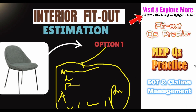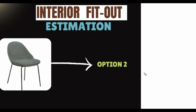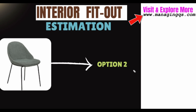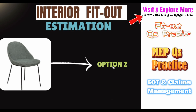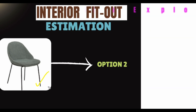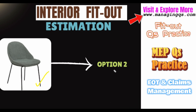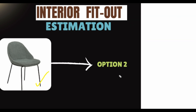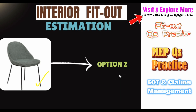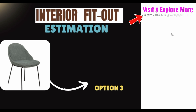Option number two: you send a quotation request to chair suppliers or vendors. You send the chair pictures, drawings, and specifications to many chair supplier vendors, and you will receive their quotations or prices. You can find the cheapest price, then add your profit margin and build up your own rate. This is option number two.